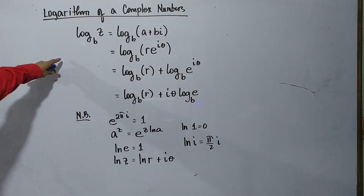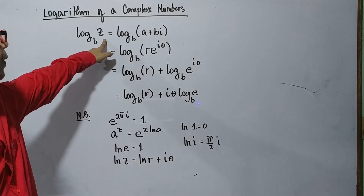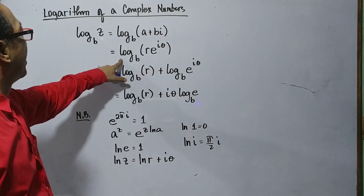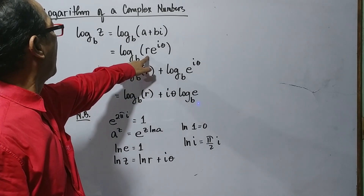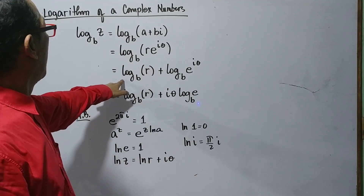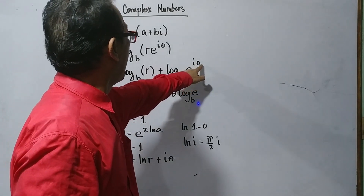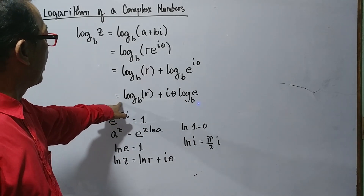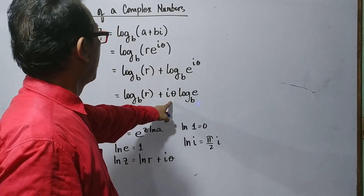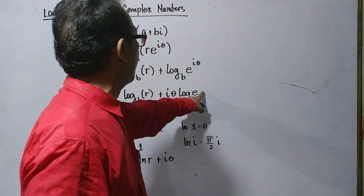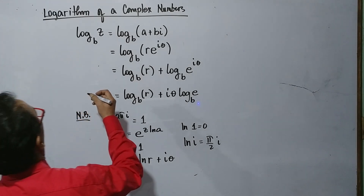For the logarithm of complex numbers, the logarithm of z base b equals the logarithm of z base b. Our complex number is represented as a plus bi. Converting to exponential form gives r·e to the i·theta, so we have the logarithm of r base b plus the logarithm of e to the i·theta base b. Applying the principle of logarithms, the exponent becomes a coefficient: i·theta times logarithm of e base b. That is our formula for the logarithm of a complex number.